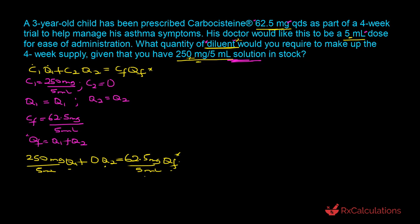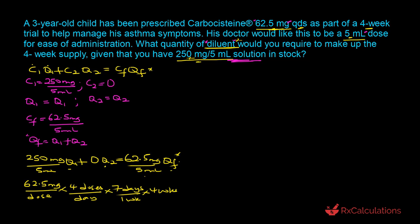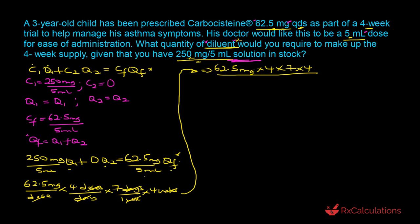We use dimensional analysis: 62.5 milligrams per dose × 4 doses per day × 7 days per week × 4 weeks. The day and week units cancel, and multiplying all the numbers gives 62.5 × 4 × 7 × 4 = 7,000 milligrams. So 7,000 milligrams is the total amount of carbocysteine needed for the four-week supply.